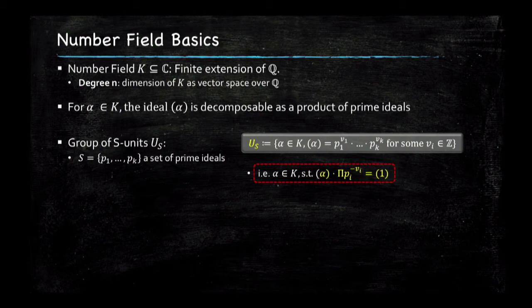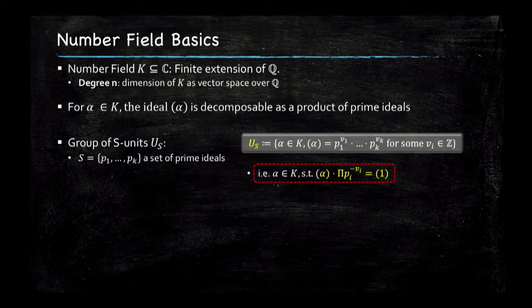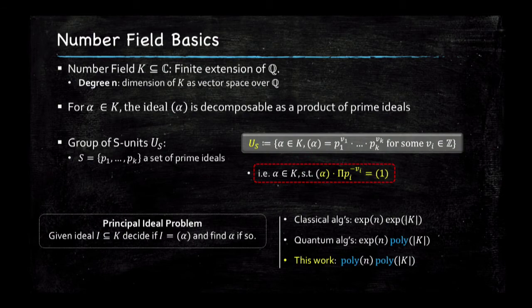The ideal generated by alpha is the smallest ideal containing alpha. That is essential in the definition of S-units: given a certain set S of prime ideals, the S-units are all those alpha such that the corresponding principal ideal factors as a product of primes only in S. In Q with S = {2, 3}, the S-unit group would be all rational numbers that can be written as a power of two times a power of three — equivalently, numbers you can multiply by powers of two and three to get one.